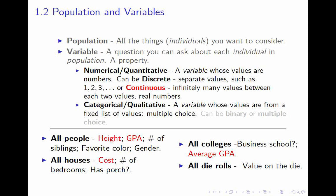The distinction within categorical variables is more straightforward. A variable can be binary if there are two possible answers, or multiple choice if there are more than two. Gender only has two possibilities, so it's binary. Any yes-or-no question — like 'does it have a porch?' or 'does it have a business school?' — is binary. Whereas favorite color, of course, has more than two choices.